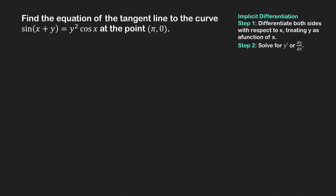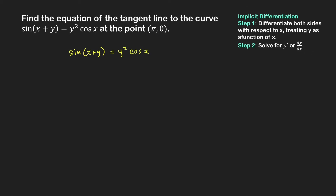Next problem: we find the equation of the tangent line to this curve at the point pi comma 0. The first step is to find the derivative so we can find the slope of the tangent line, applying implicit differentiation. We're given sin of x plus y equal to y squared cosine x. So we take the derivative of both sides with respect to x.